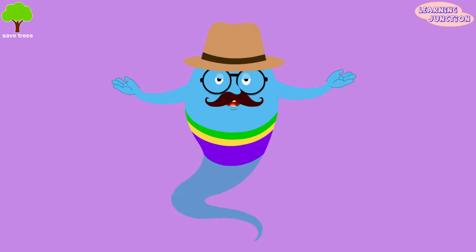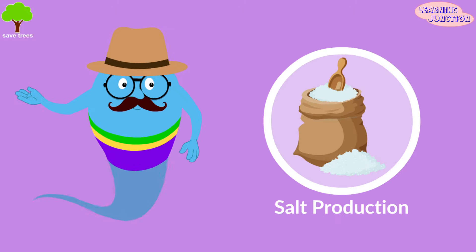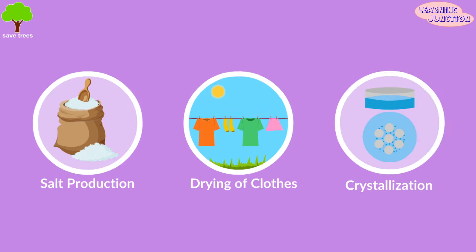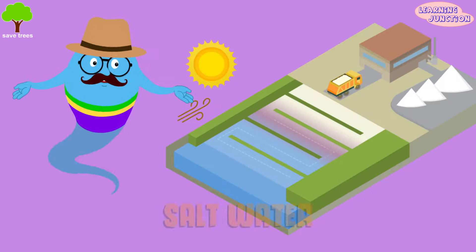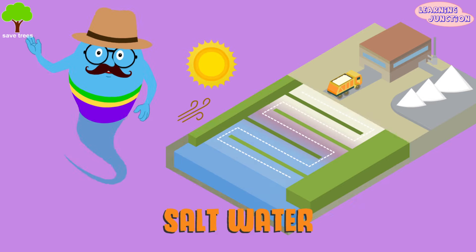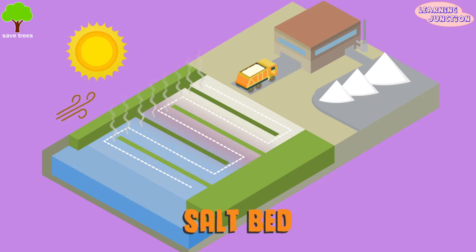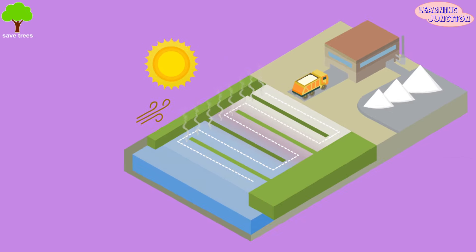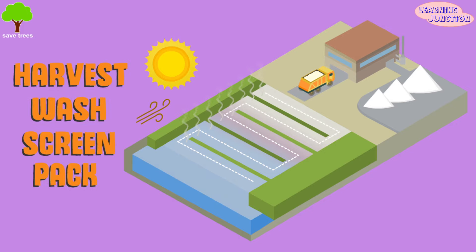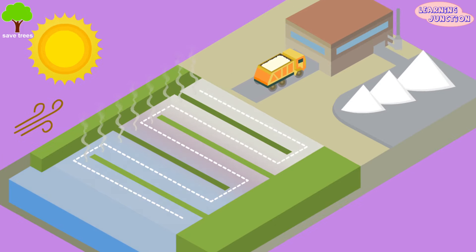Some examples of evaporation are salt production, drying of clothes, crystallization, etc. Let me show you something. Salt water is captured in shallow ponds and allowed to evaporate by means of solar energy and wind energy. During this process, water evaporates and a salt bed forms on the bottom of the pond. The salt is harvested, washed, screened, and packaged. This is how salt is made with the help of evaporation.